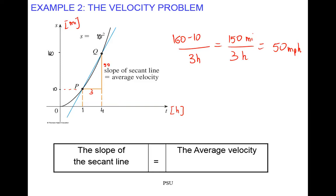The conclusion is: the slope of the secant line represents the average velocity, or more generally the average rate of change — not only distance over time. So whenever you need the average rate of change or average velocity, think about the slope of the secant line: Δy over Δx.